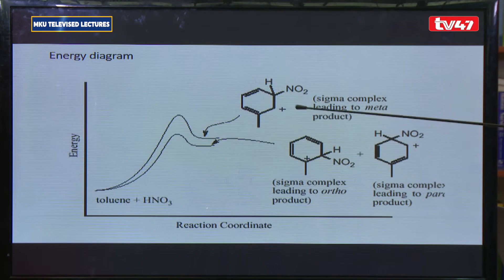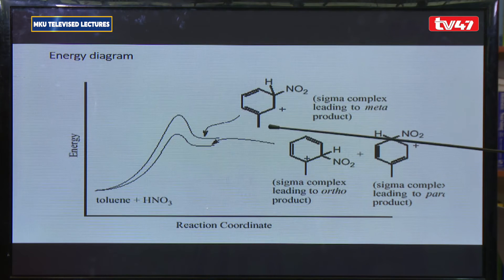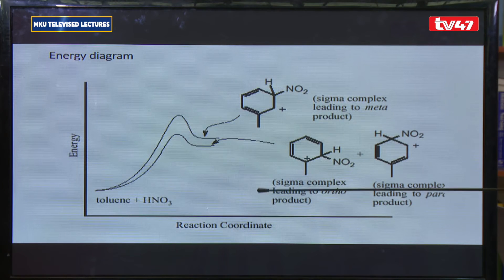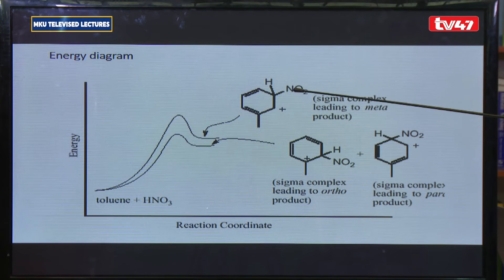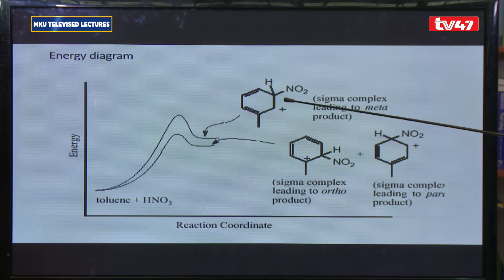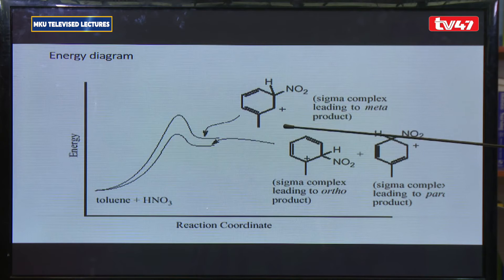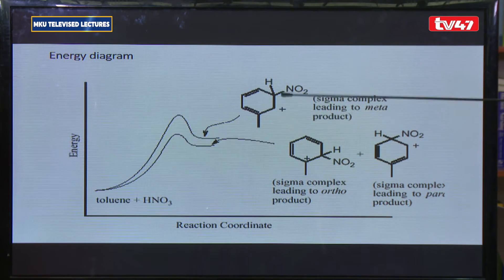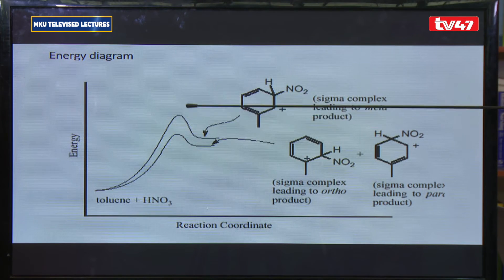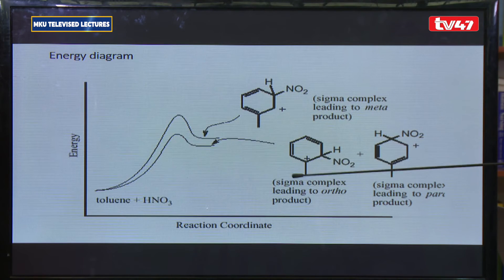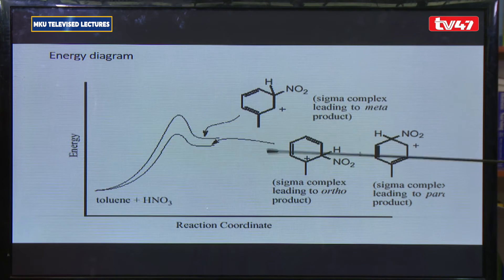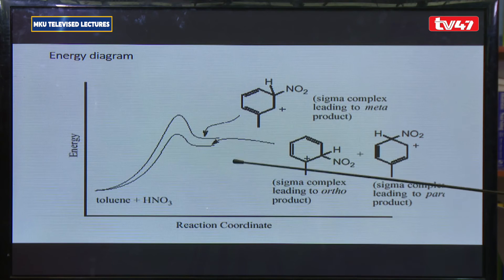Energy diagrams show that the ortho position is the most favored intermediate compared to the meta position. The meta position requires greater activation energy than ortho substitution. The ortho substitution is favored because it requires less energy, the intermediate is more stable, and the end product is also more stable. Similarly, para position is equally favored. So methylbenzene represents alkylbenzenes and, by extension, benzenes with electron donating substituents.